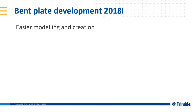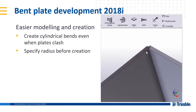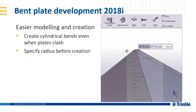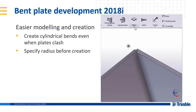We've focused on making the modeling of bent plates easier in 2018i. Previously, there was a limitation that the bend was created to fit the gap between two parts, meaning parts had to be modeled to leave a gap, which could be time consuming and difficult to do. Now in 2018i, as you can see, the parts are allowed to clash and you can still create a simple cylindrical bend.